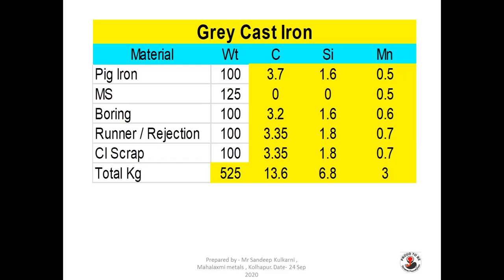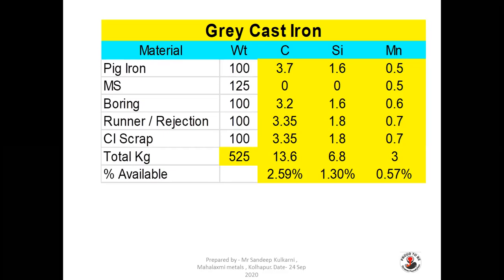Similarly, silicon is 6.8 kg and manganese is 3 kg in the given charge of 525 kg. We can now calculate the percentage of available carbon, silicon and manganese in the given charge: that is 2.59% carbon, 1.3% silicon and 0.57% manganese available in the charge.